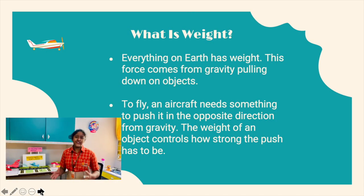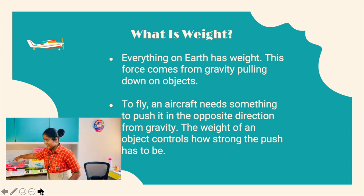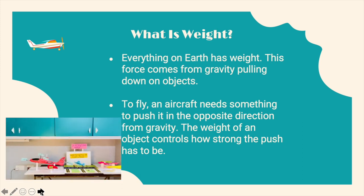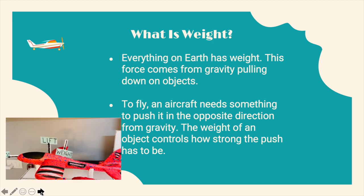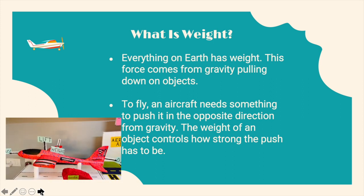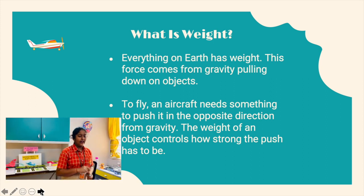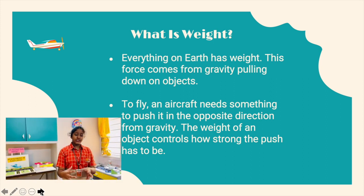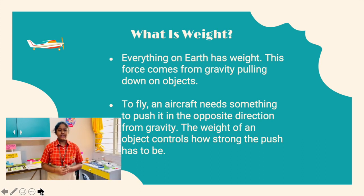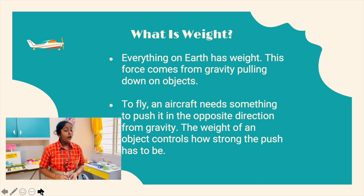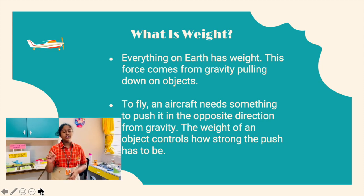What is weight? Everything on Earth has a weight. This force comes from gravity pulling down objects. To fly, an aircraft needs something to push it in the opposite direction from gravity. The weight of an object controls how strong that push has to be.